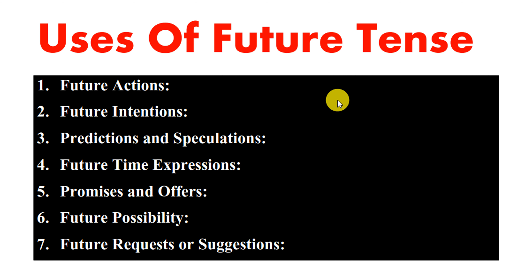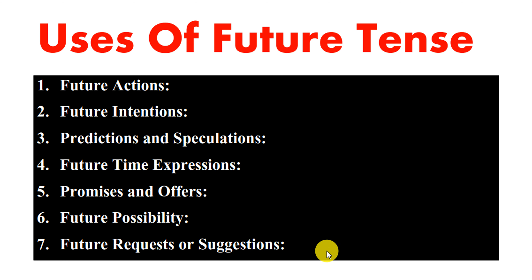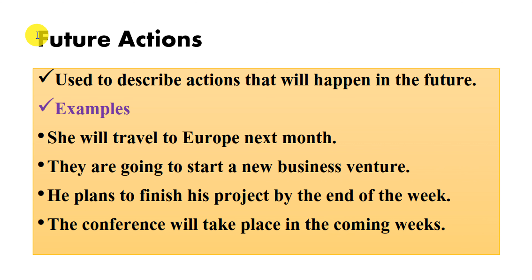So let's start our discussion. The future tense is used to express future actions, future intentions, predictions and speculations, future time expressions, promises and offers, future possibilities, and future requests or suggestions. Let's discuss these uses of the future tense one by one along with examples.